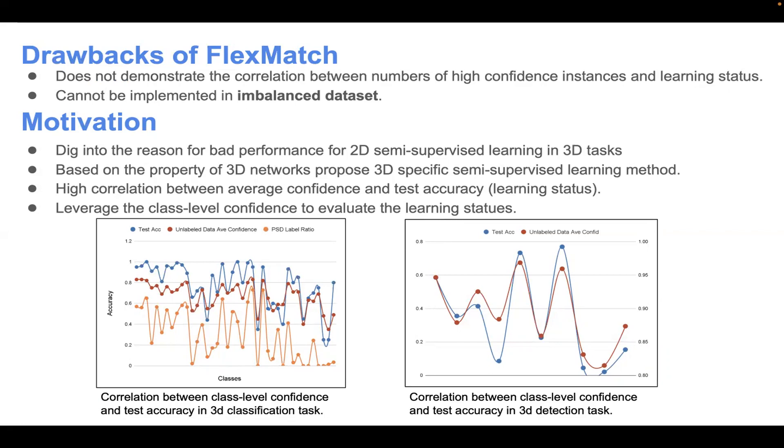We find that there is a high correlation between class-level confidence and test accuracy in both 3D classification and detection tasks, as shown in the figures below.